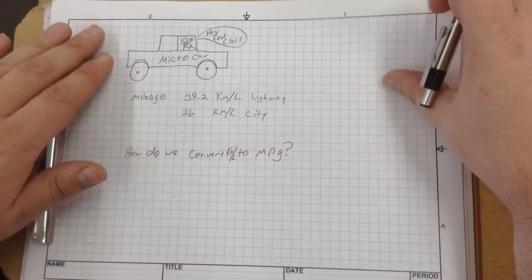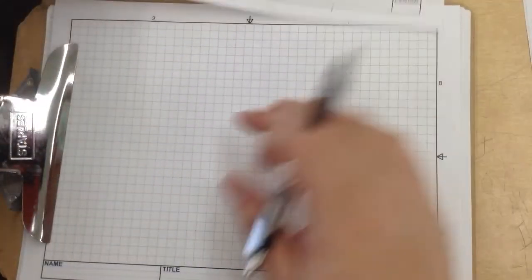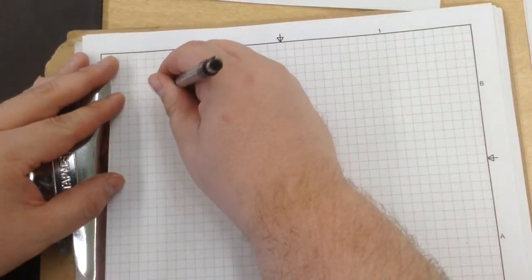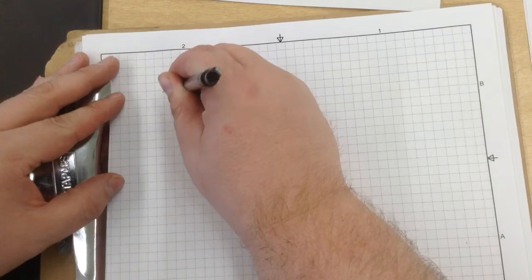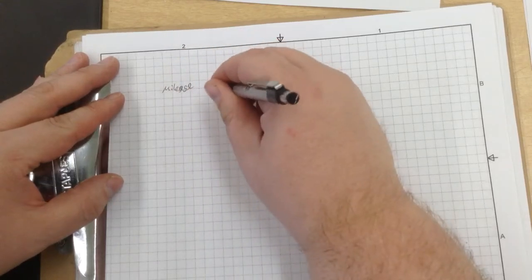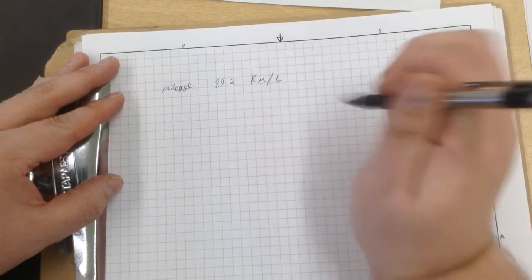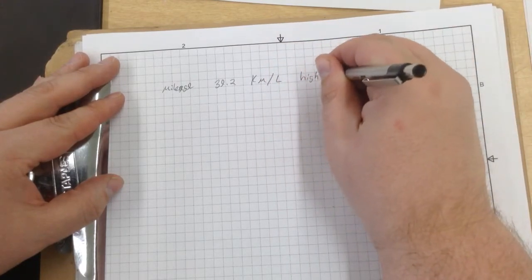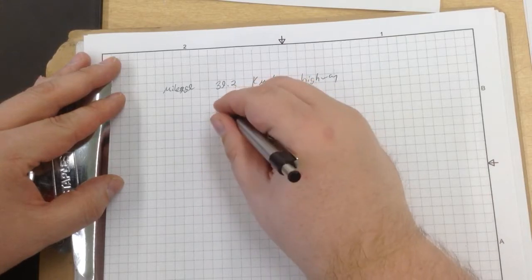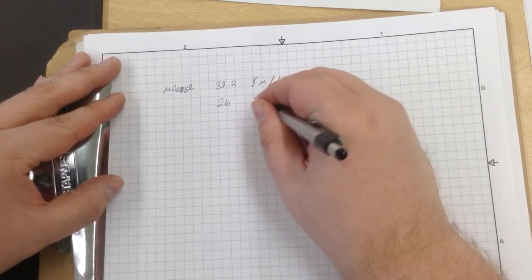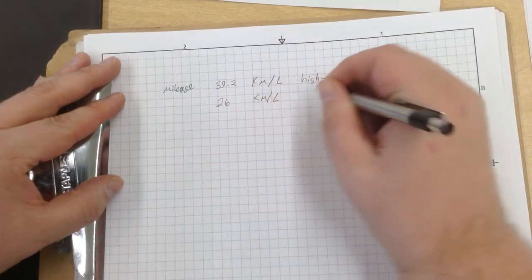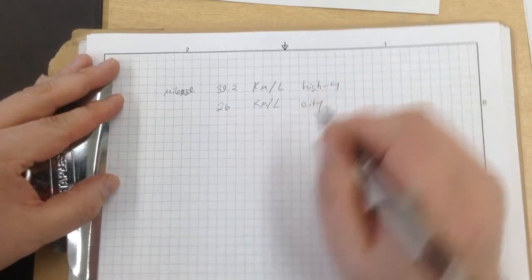I'm going to switch pages here and write down our givens. Our mileage on our car is 39.2 kilometers per liter, and that is highway. The mileage is 26 kilometers per liter, and that is city.